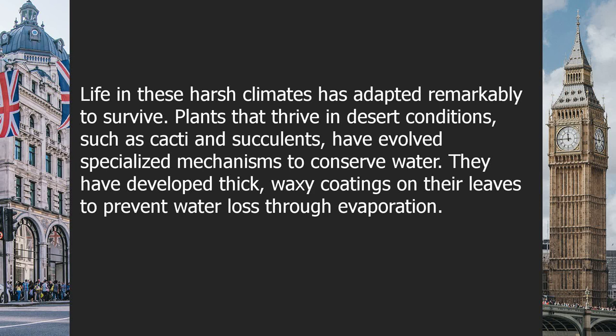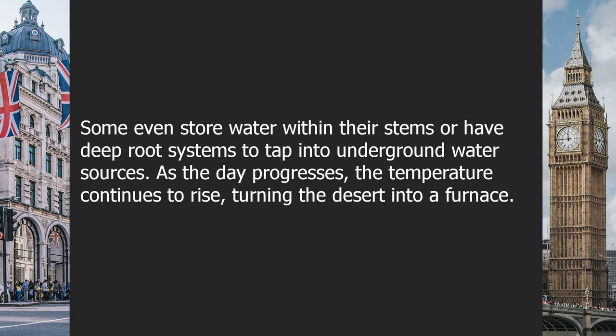Life in these harsh climates has adapted remarkably to survive. Plants that thrive in desert conditions, such as cacti and succulents, have evolved specialized mechanisms to conserve water. They have developed thick waxy coatings on their leaves to prevent water loss through evaporation. Some even store water within their stems or have deep root systems to tap into underground water sources.